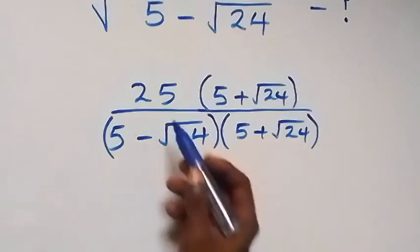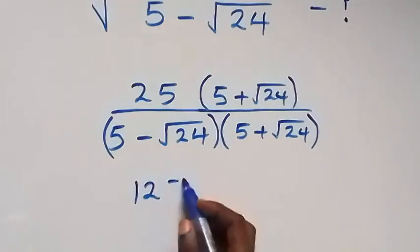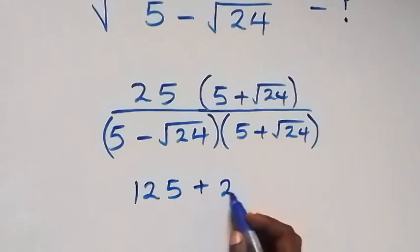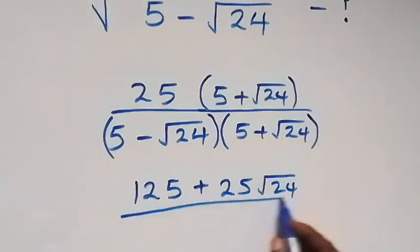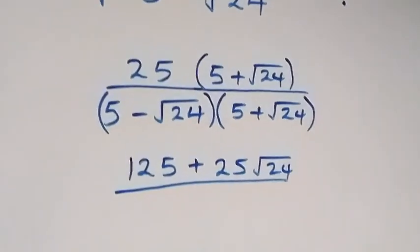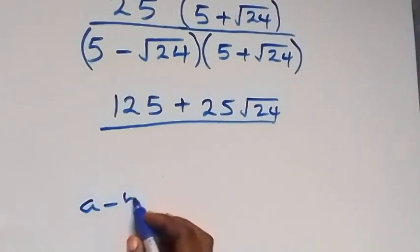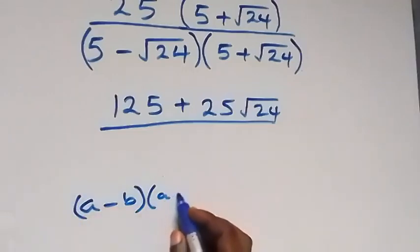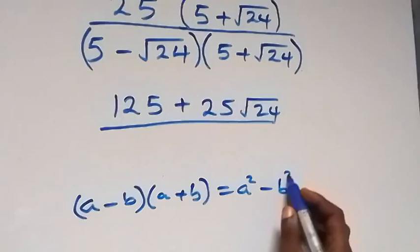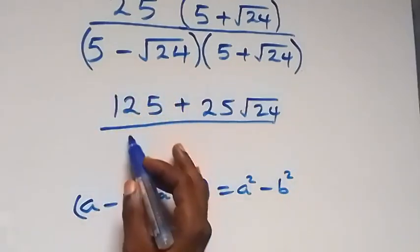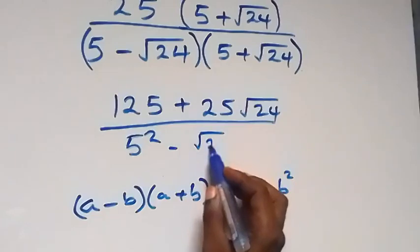Opening the bracket in the numerator: 25 times 5 gives 125, then plus 25 root 24. In the denominator, this follows the identity (a minus b)(a plus b) equals a squared minus b squared, so we have 5 squared minus root 24 squared.